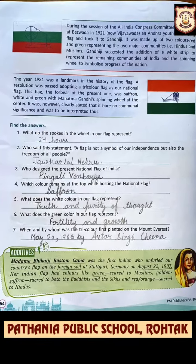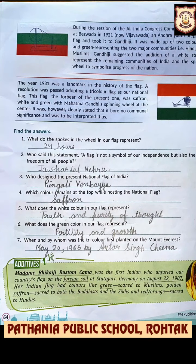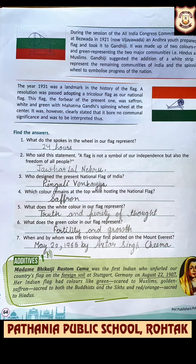Now we have the exercise based on our national flag. What do the spokes in the wheel of the flag represent? 24 hours. We have the Ashok Chakra at the center, and this Ashok Chakra has 24 spokes which represent 24 hours of a day.